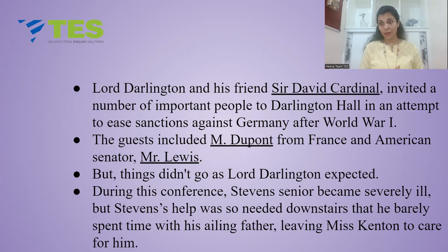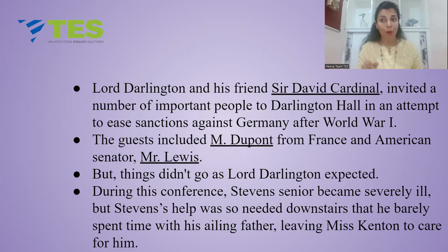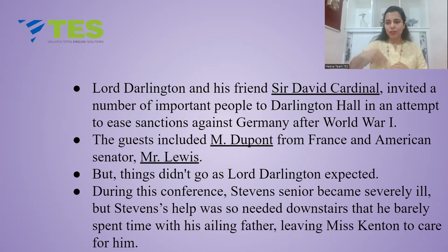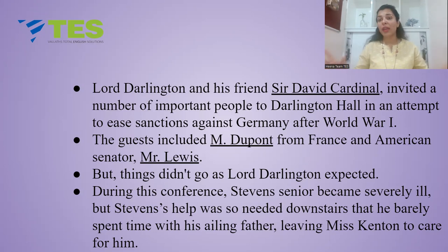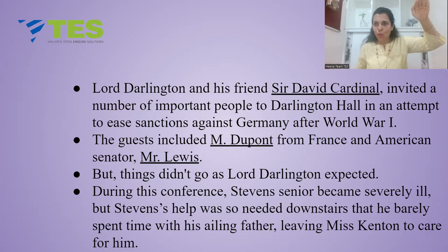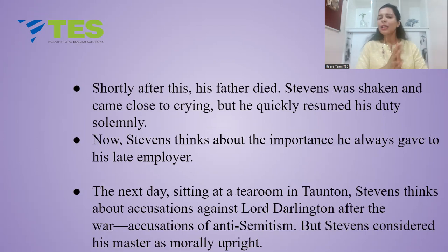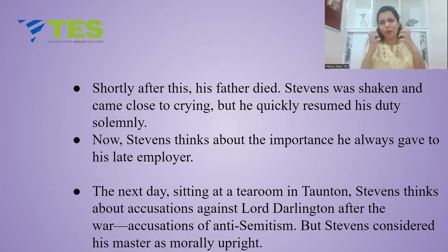But things did not go as Lord Darlington expected. Around this conference, Stevens Sr. — the father of Stevens — became severely ill. They lived in the same house, and Stevens' help was so needed downstairs that he barely spent time with his ailing father, leaving Miss Kenton to care for him. He kept his profession above his family. Shortly after this, his father died. Stevens was shaken and came close to crying, but he quickly resumed his duties solemnly.